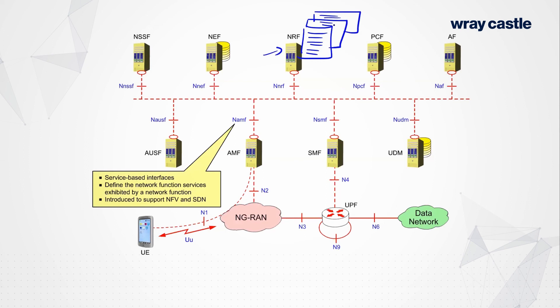The NRF is a key function that allows the network to be dynamic. Every time a new network function is instantiated, its presence is registered at the NRF, making that information available to any other function that needs it. You might have multiple SMFs or PCFs — perhaps one per network slice or multiples per slice. Every time new instances are created, they're registered in that library so we know how to find them. Since these are software, you can start, stop, and scale them as you see fit.